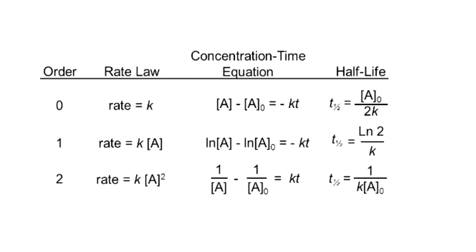For zero-order, A-zero appears in the numerator of the half-life expression, so if the initial concentration is doubled, T-half is also doubled. For second-order, A-zero appears in the denominator, so if A-zero is doubled, T-half becomes half of its initial value. For first-order, T-half is independent of A-zero — there is no A-zero parameter. We use these concepts to answer the question.